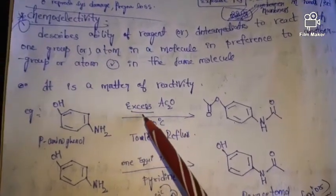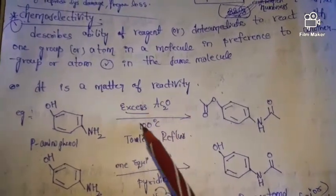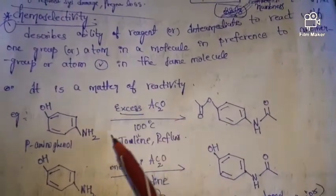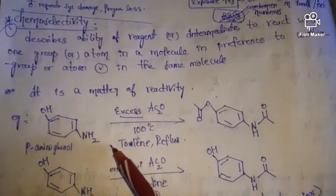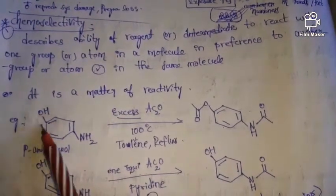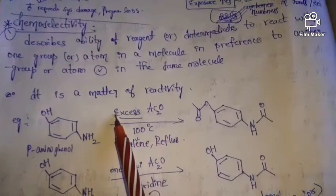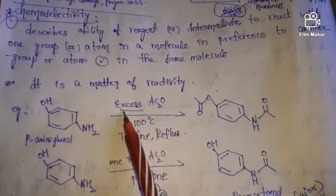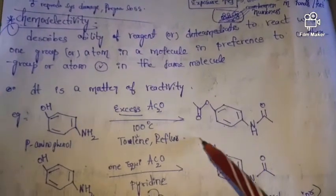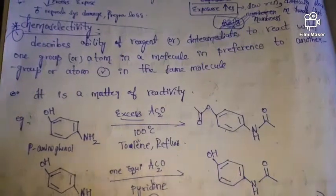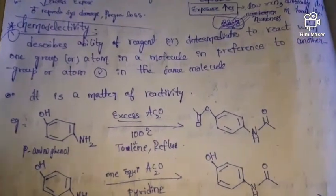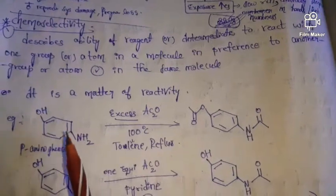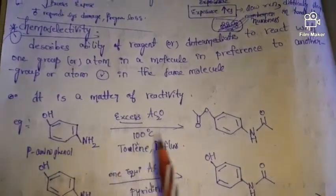Since we are taking the reagent in excess amount, there is no need for selection. The reagent can react with both groups present in the molecule because we have taken excess of acetic anhydride. So in both cases we get the product — the reagent has reacted with both the groups present within this molecule.